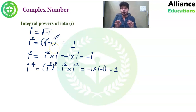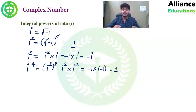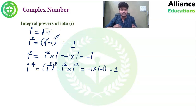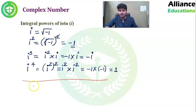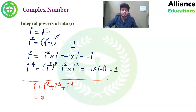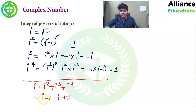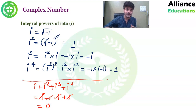एक interesting fact: अगर हम i + i² + i³ + i⁴ को add करें तो क्या मिलेगा? i + (−1) + (−i) + 1। i और −i cancel, −1 और +1 cancel। इन चारों का summation 0 आता है। तो 4 consecutive powers of iota का summation हमेशा 0 होता है।